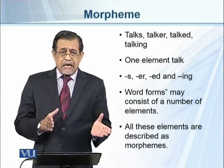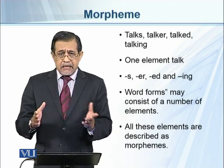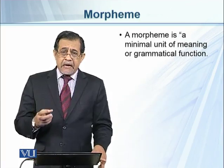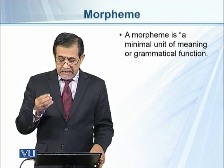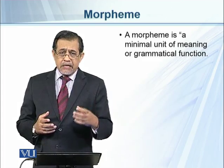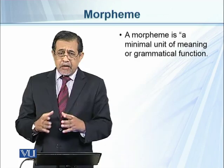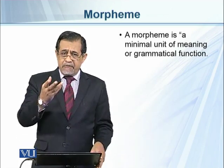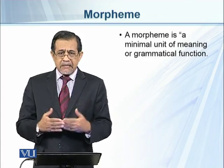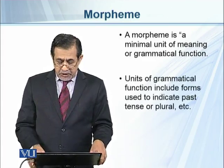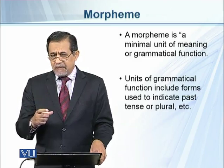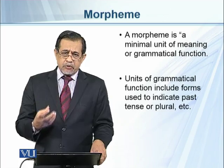The word 'talk' and the 's' are two morphemes; 'talk' and 'er' are two morphemes; similarly 'talked' and 'talking' are each two morphemes. We can define a morpheme as a minimal unit of meaning or grammatical function. It either has a semantic function — 'talk' carries more meaning than 's' or 'er' — or a grammatical function, for example 'ed' in 'talked' gives the word the meaning of past tense. Grammatical morphemes indicate past tense, plural, and similar functions.